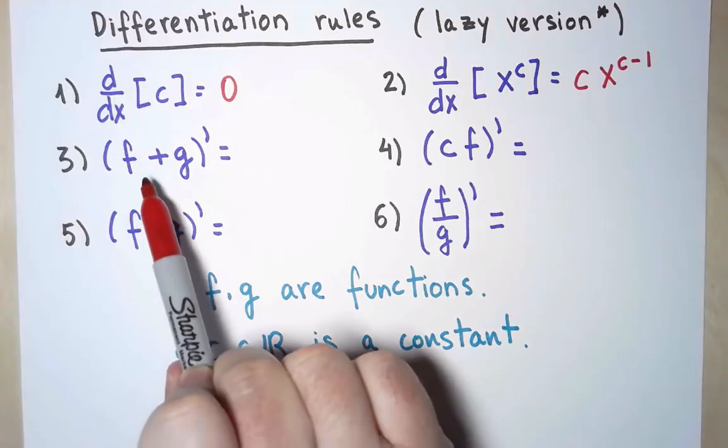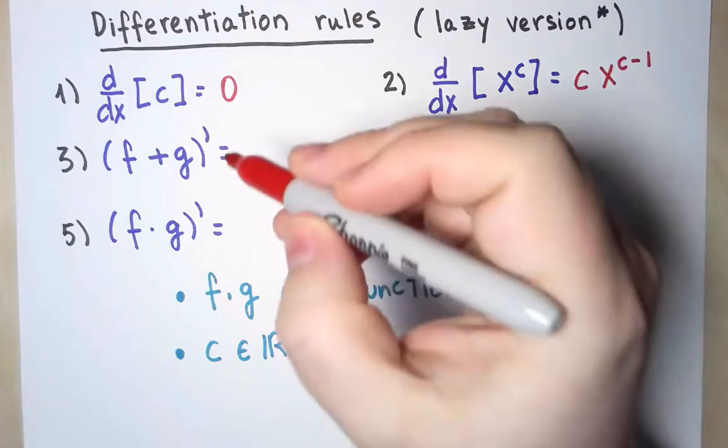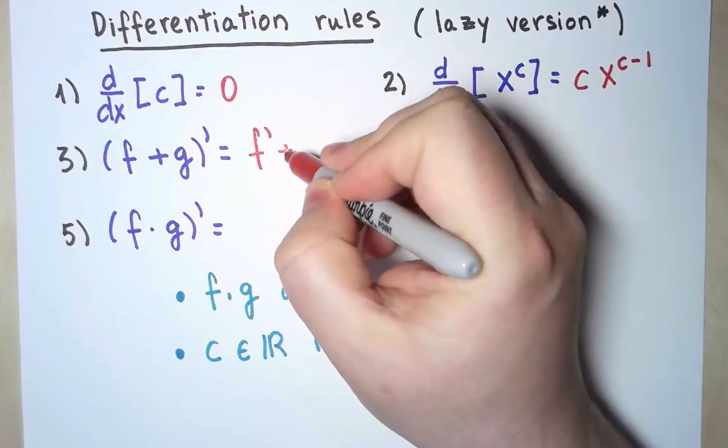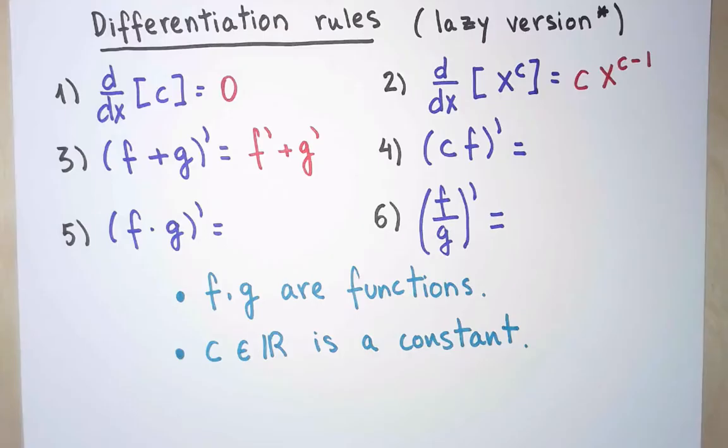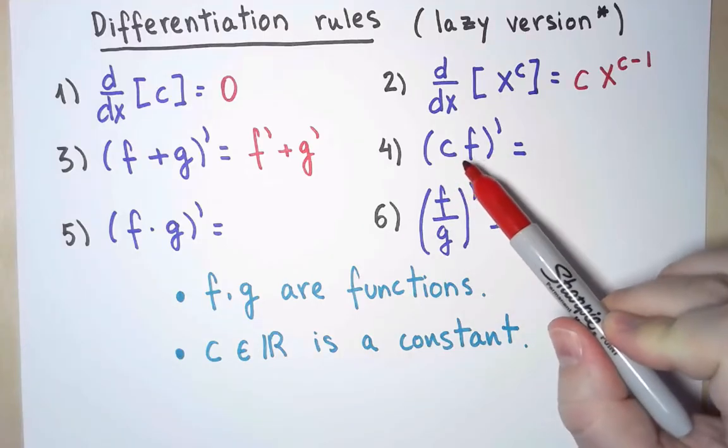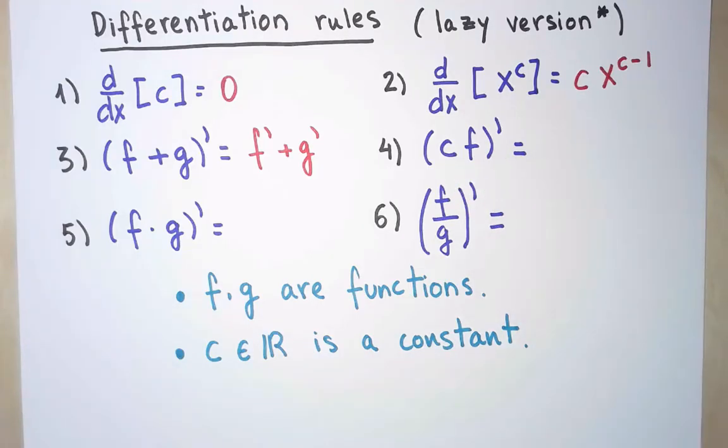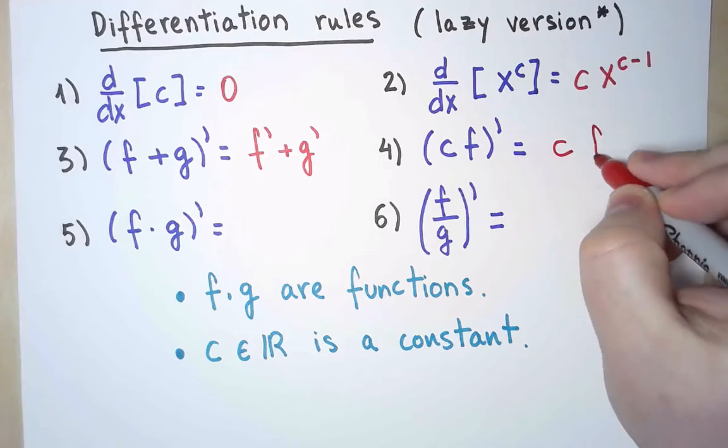The derivative of a sum, f plus g, is the sum of derivatives, f prime plus g prime. The derivative of a constant c times a function f is the constant times the derivative of the function.